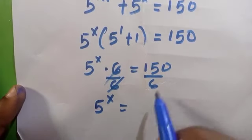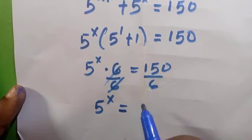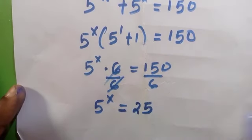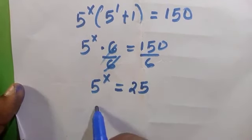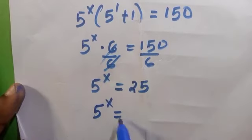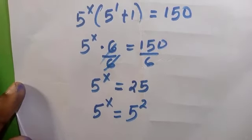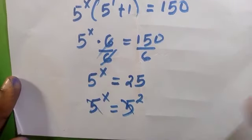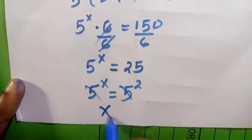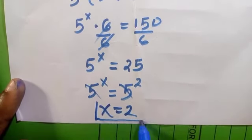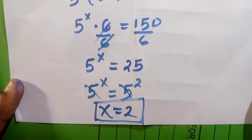Therefore 5^x equals 25. So 25 in exponent form is 5^x equals 5^2. So when we cancel 5 we get x equals 2, just like we got in the first method.